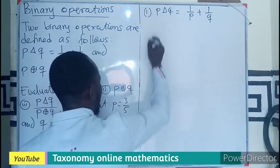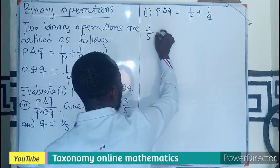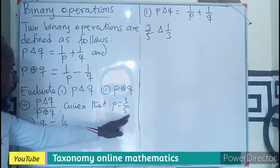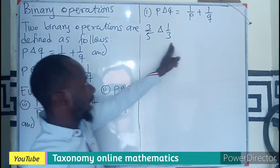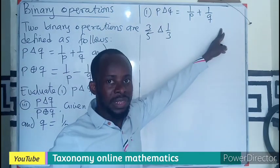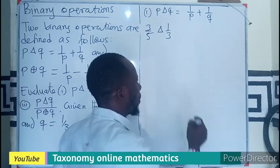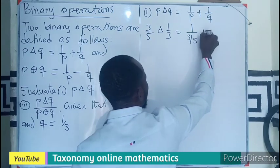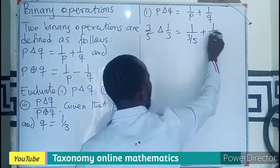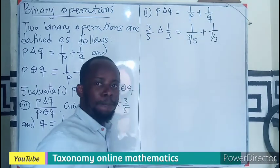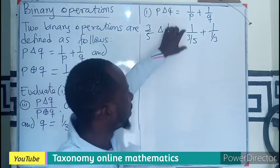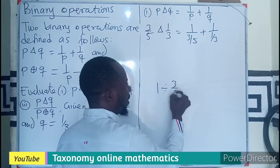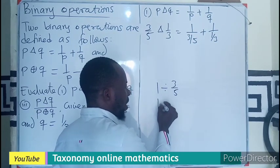As in P, Q, then the operator will also change to plus, meaning 1 over 3 over 5 plus 1 over 1 over 3. All right, so this is a double division whereby we know if I have 1 divided by 3 over 5, I can have 1 times flipping of this fraction, 5 on top, 3 down.